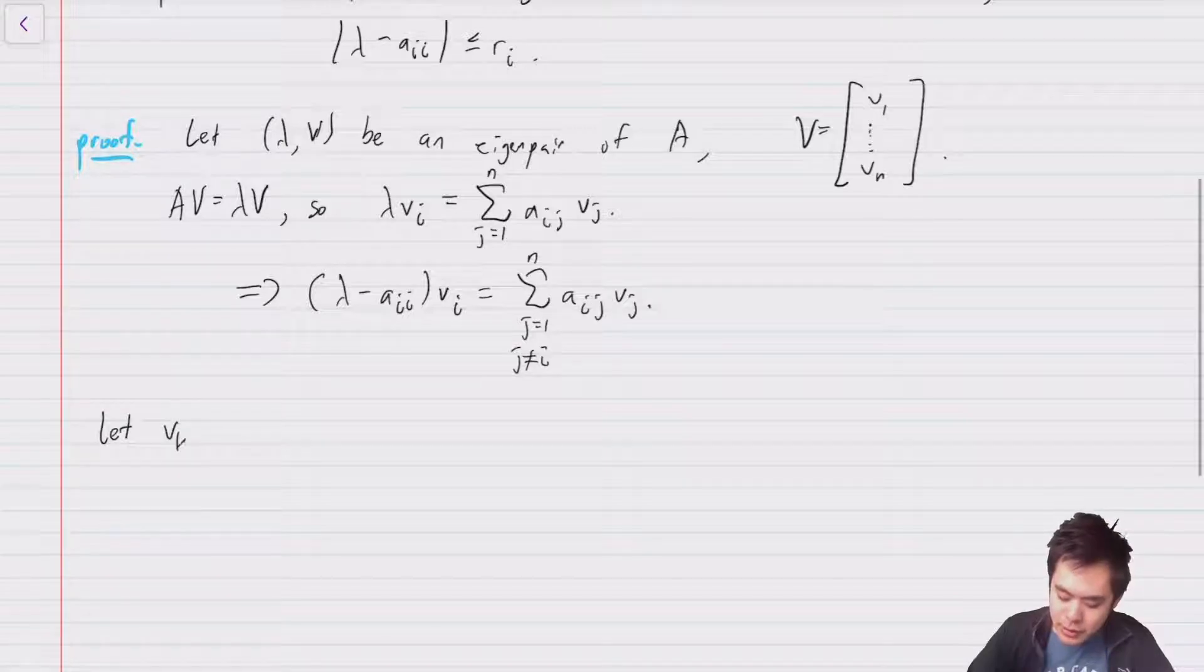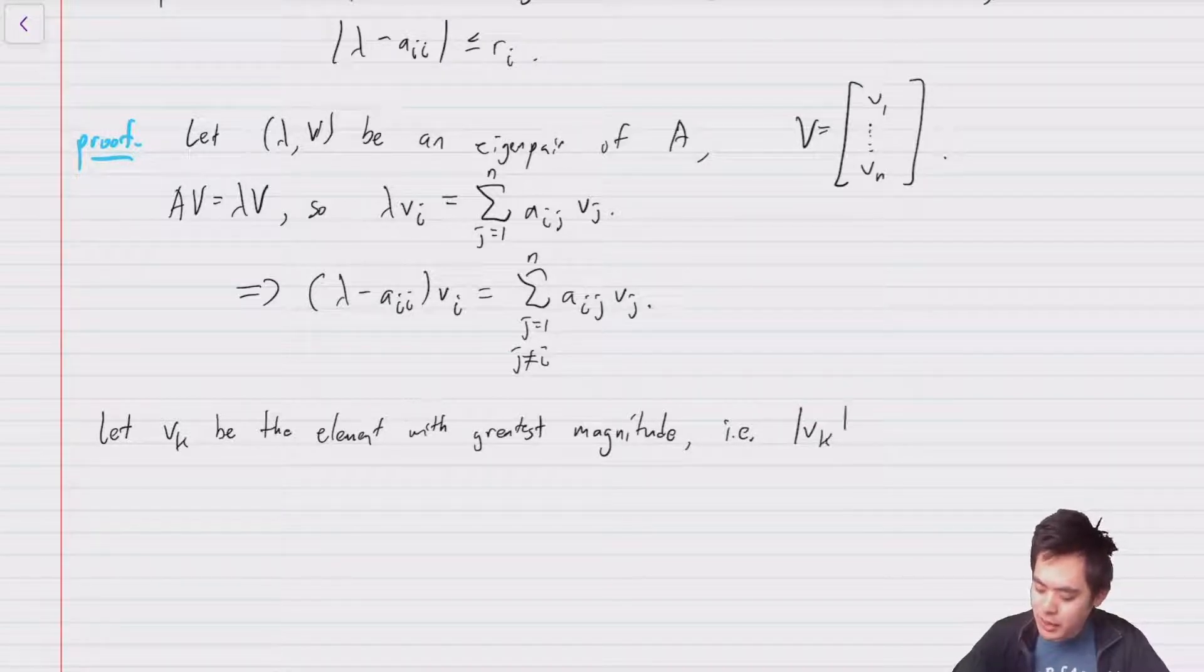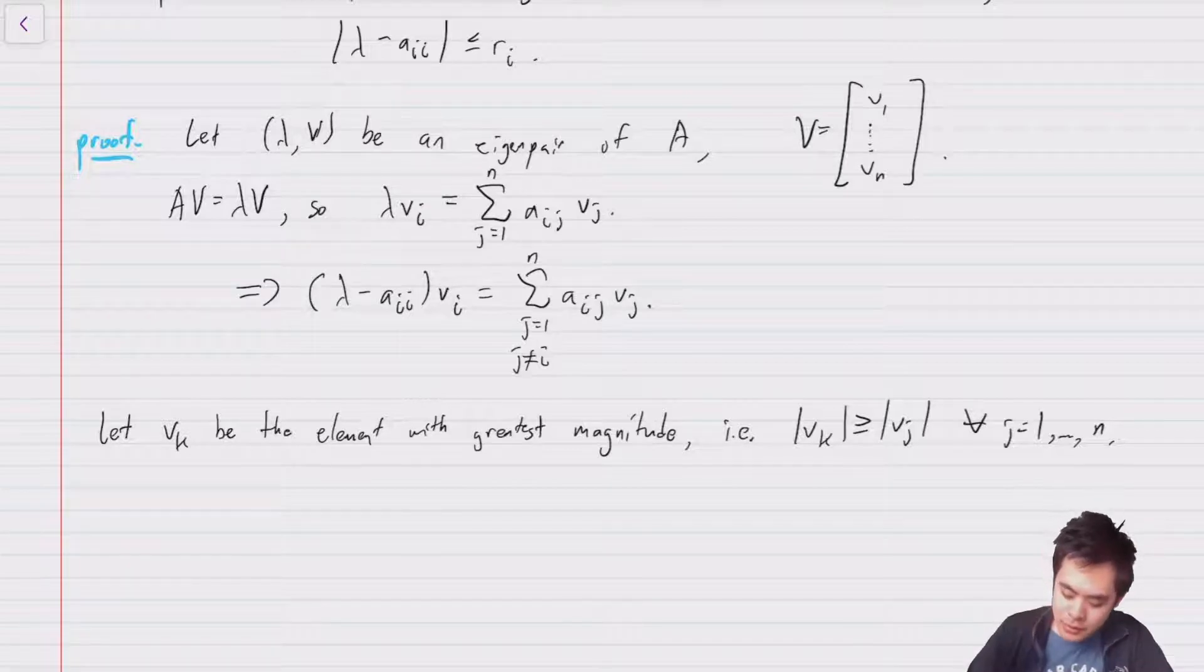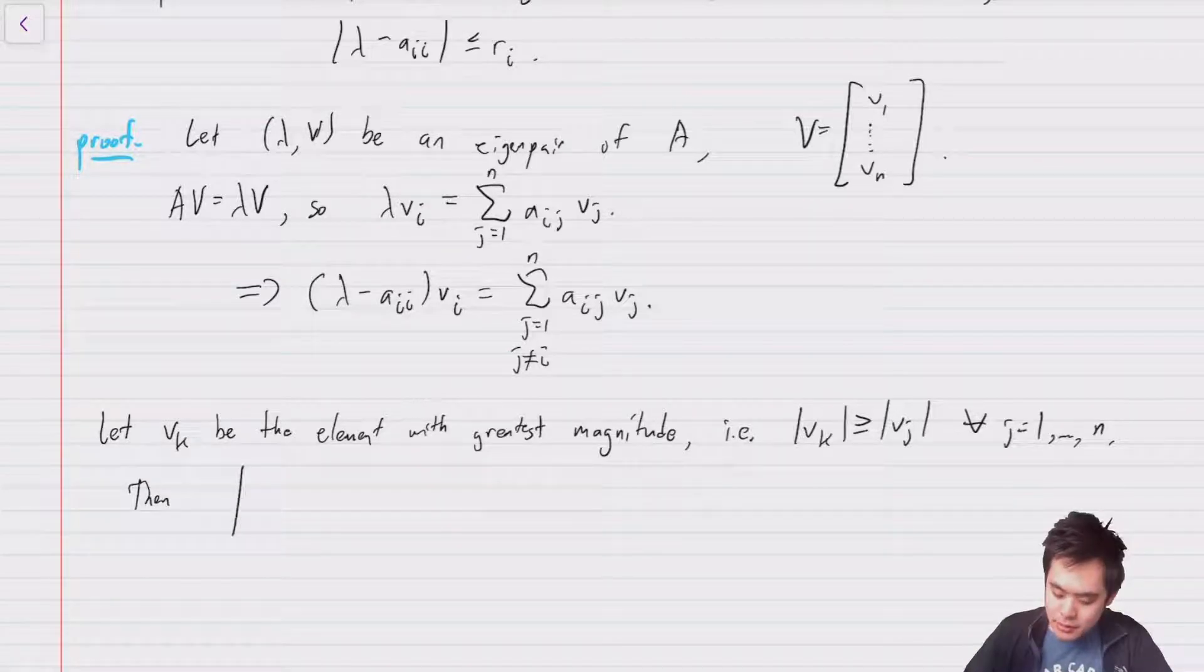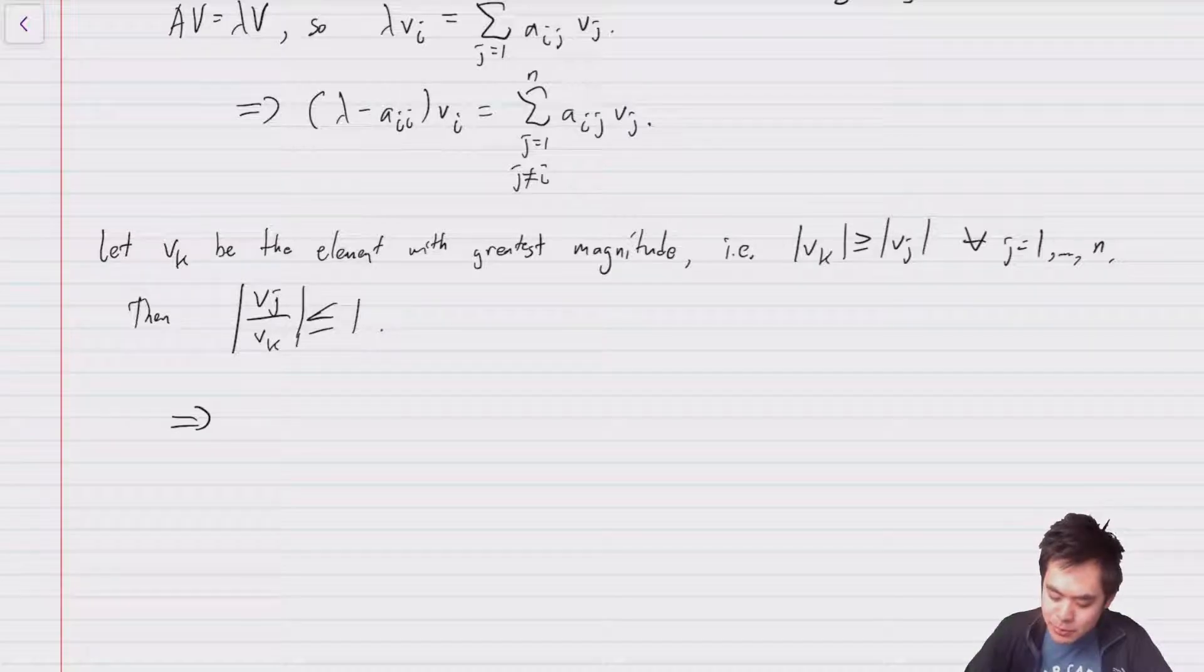And now what we do is we let v_k be the element with the greatest magnitude. So the biggest thing in v, so that is to say more precisely we have |v_k| ≥ |v_j| for all j in 1 through n. So it's one of the biggest things at least. Well then we have that |v_j/v_k| has to be less than or equal to 1. So this is almost by definition.